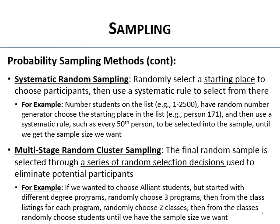For example, to choose Alliant students, you start with different degree programs and randomly choose three. Then from the class listings for each program, you randomly choose two classes. Then from those classes, you randomly choose students until you have the sample size you need. That's three stages — program, class, student — each one random. That makes it a multi-stage random cluster sample.